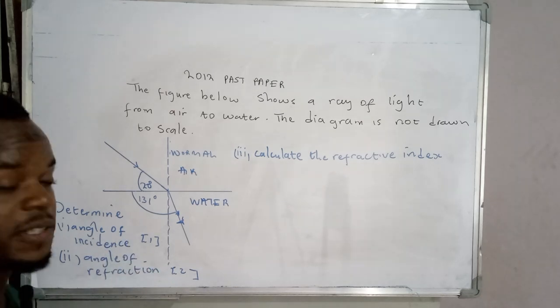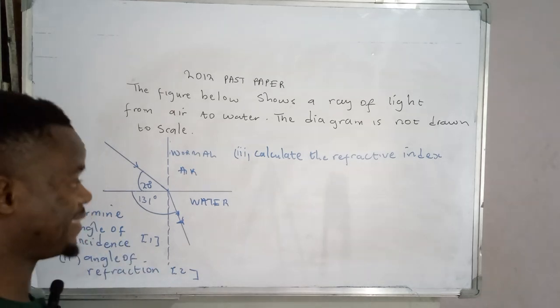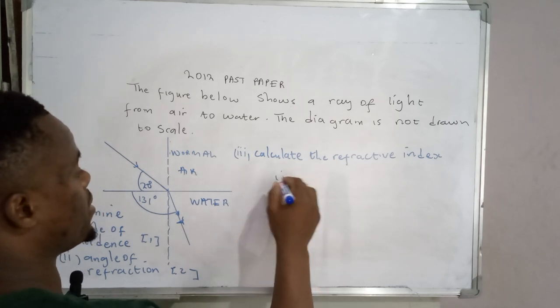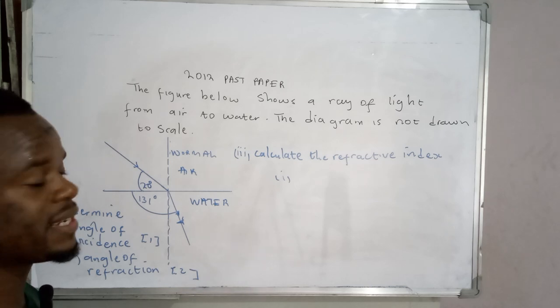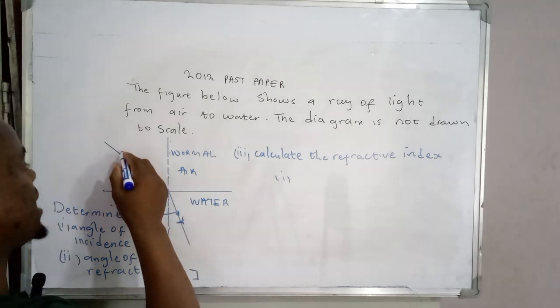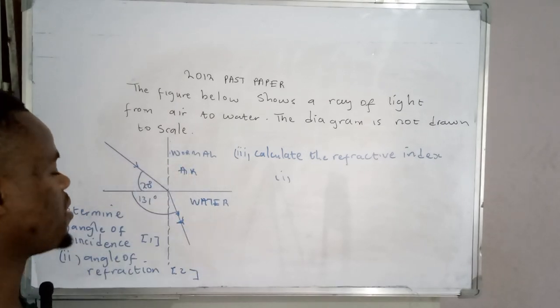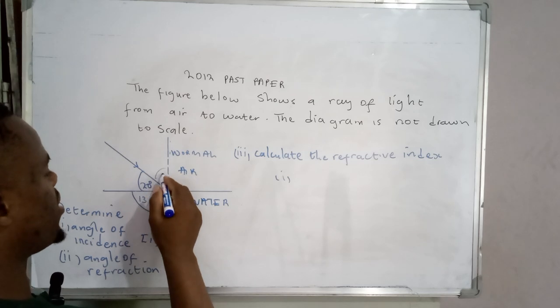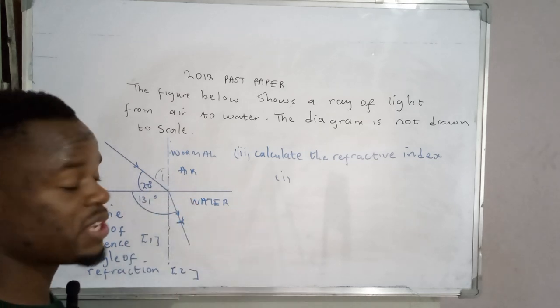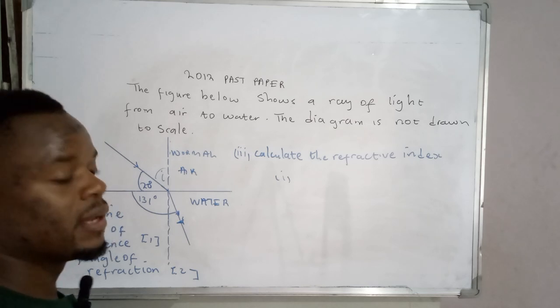So the first one is actually pretty simple. What you need to know is that the angle of incidence is the angle that is between the incident ray and the normal. So in this case, the angle of incidence is this angle which is in between.